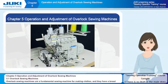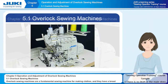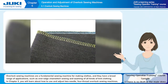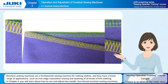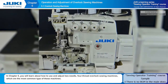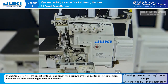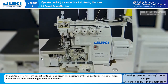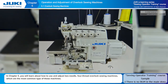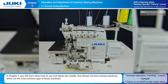Chapter five: operation and adjustment of overlock sewing machines. Overlock sewing machines are a fundamental sewing machine for making clothes and they have a broad range of applications such as over-edge chain stitch sewing and seaming of all kinds of knit clothing. In chapter five you will learn about how to use and adjust two needle four thread overlock sewing machines, which are the most common type of these machines.